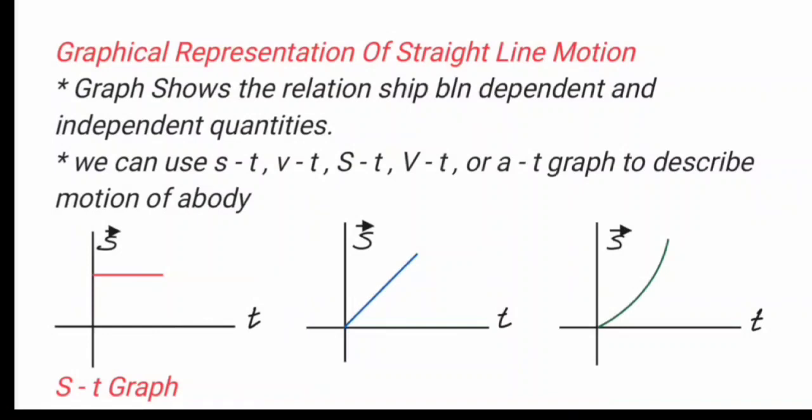Graphical representation of motion can be represented by using a graph and also by using a table. In order to draw a graph we need two quantities: one, we need a dependent variable, and two, we need an independent variable. We also need a controlled variable.